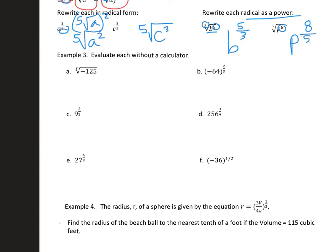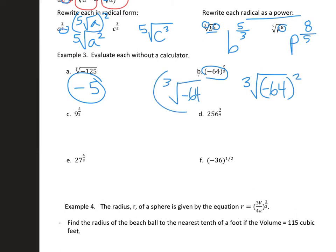Evaluating these without a calculator: the cube root of negative 125 is negative 5, because negative 5 times negative 5 times negative 5 is negative 125. For the next one, rewrite it as a radical: the cube root of negative 64 squared, or the cube root of negative 64, all of that squared. Negative 64 squared would be pretty big, but the cube root of negative 64 is negative 4, so negative 4 squared — because of the 2 — is positive 16. Do the root first, then the power.